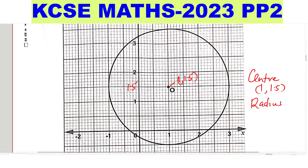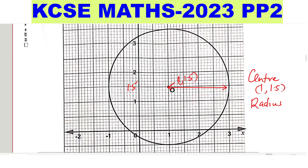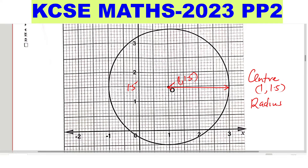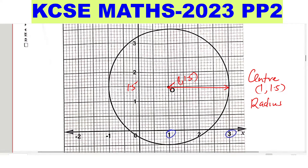The radius will be the distance from the center to the circumference. So how many units are those? It is from 1 all the way to 3, so those are 2 units. The radius is equal to 2 units. Having the center and the radius, we can now proceed and get the equation.